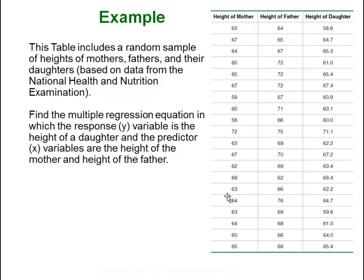Here's a simple example: a random sample of heights of mothers, fathers, and their daughters. They want to find the multiple regression equation where the response variable is the height of the daughter and the predictor variables are the heights of their parents. Instead of just looking at the influence that a mother might have on a daughter's height, we're going to look at the influence that the mother and father combined have. The idea being that two tall people will have a taller child versus two shorter people would probably have a shorter child.